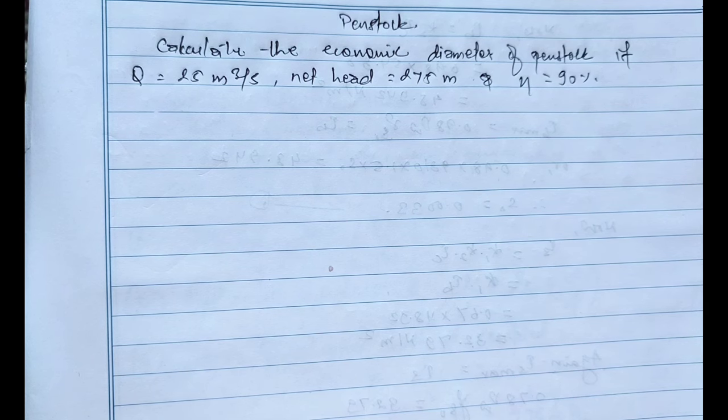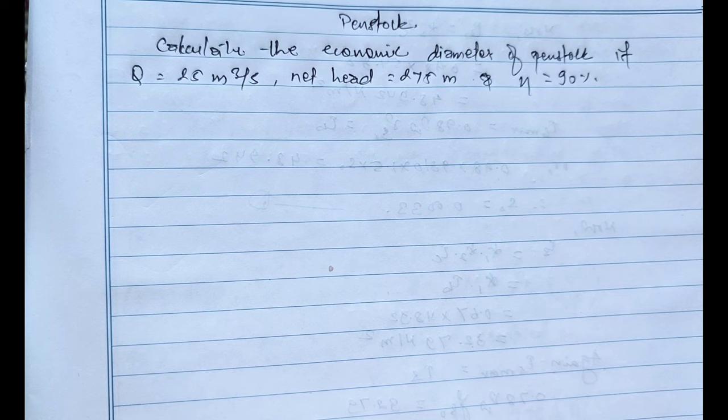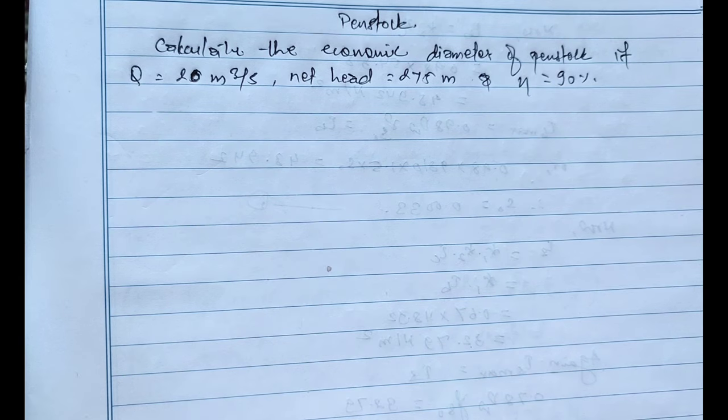Hello everyone, welcome to Hydropower. Today in this video we are going to calculate the penstock diameter. The given question is: calculate the economic diameter of penstock if design discharge Q is equal to 20 meter cube per second and net head equals 275 meters, where the efficiency overall efficiency is equals to 90%.